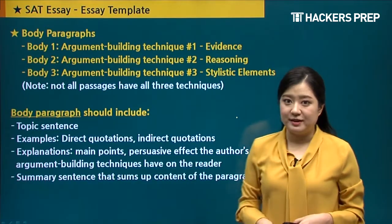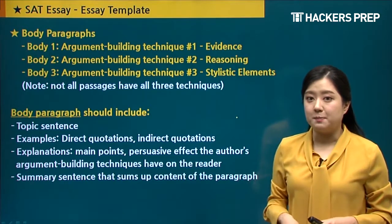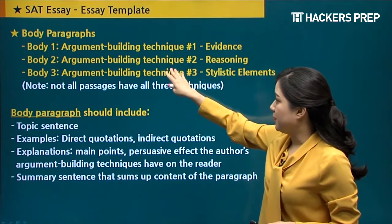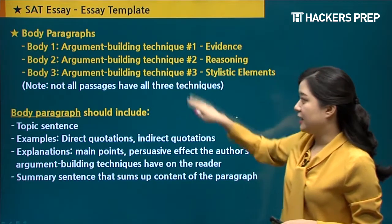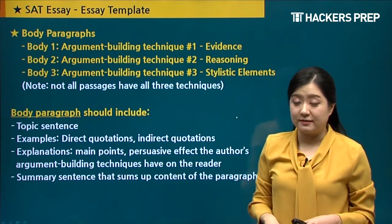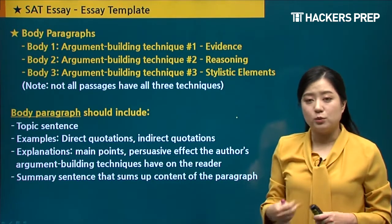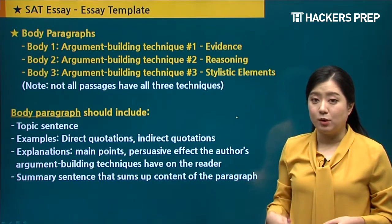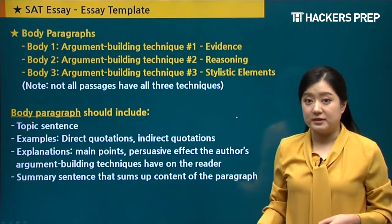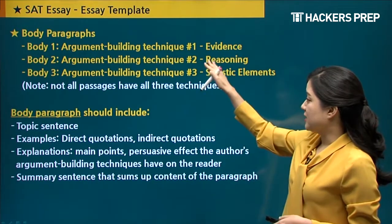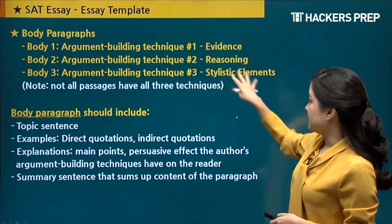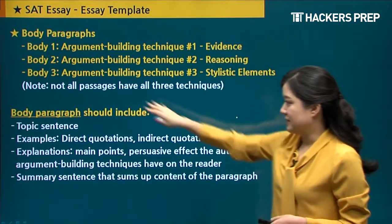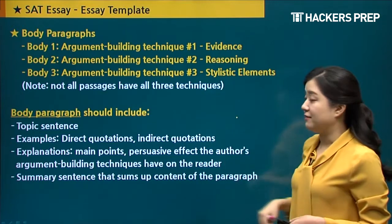Now let's look at the body paragraph. It would be ideal to have three body paragraphs because there are three argument building techniques, and according to those techniques you should have three body paragraphs. If there are only two techniques, you could write two body paragraphs, or write three and have one repeat a technique. Make sure you have two or three body paragraphs covering evidence, reasoning, and stylistic elements — ideally all three, but if not, just two. Note that not all passages have all three techniques.